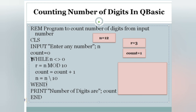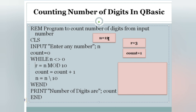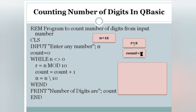Now N is 12. The condition: 12 not equals to zero is true. So it goes to the next line: R equals to N MOD 10. 12 divided by 10 gives remainder 2 — the last digit — so R equals 2.